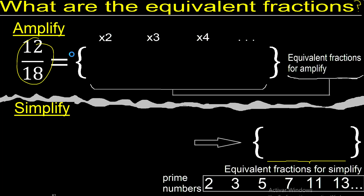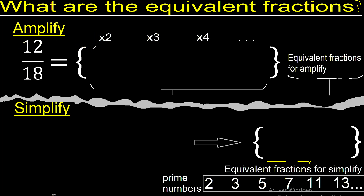First, multiply by 2. 12 times 2 is 24. 18 times 2 is 36. Now multiply by 3.